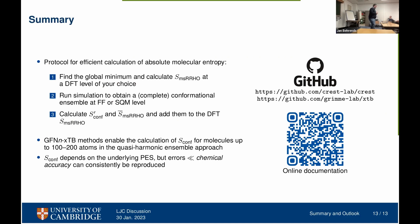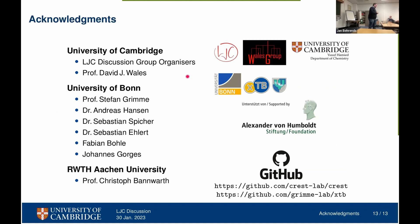I hope I could show you that it is possible in a simple three-step protocol to obtain really good entropy predictions. The accuracy is better than chemical accuracy for the benchmark we looked at, and the GFN-xTB methods enable the application of such protocols for rather large system sizes due to their computational efficiency. The programs we have written are available on GitHub. I'd like to express my gratitude to the Lennard-Jones discussion group organizers, David Wales for being my PI and hosting me in Cambridge, Stefan Grimme, and all contributors. Funding is by the Alexander von Humboldt Foundation. Thank you all for your attention.